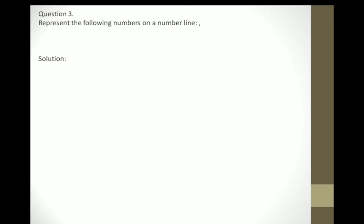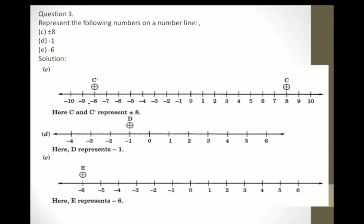Question number 3 continued: Represent positive and negative 8, negative 1, and negative 6 on a number line. Positive numbers are always on the right hand side and negative numbers on the left hand side. We give C for positive 8 and C-dash for negative 8. Negative 1 is represented by D and negative 6 is represented by E.